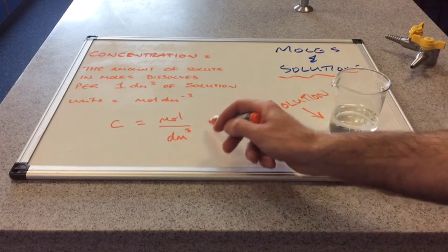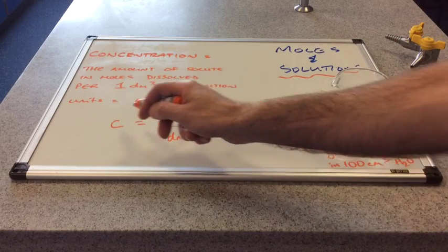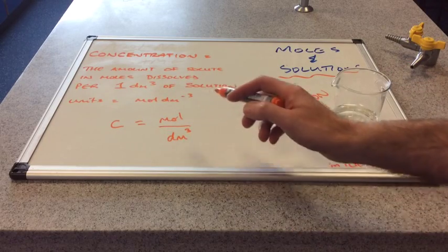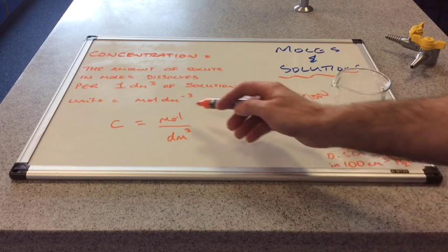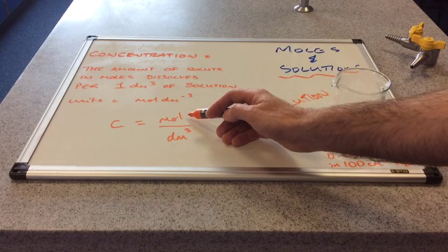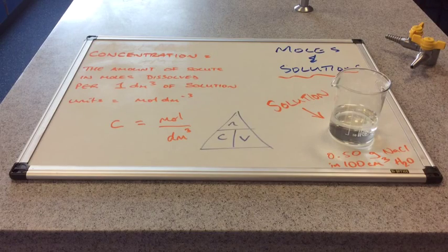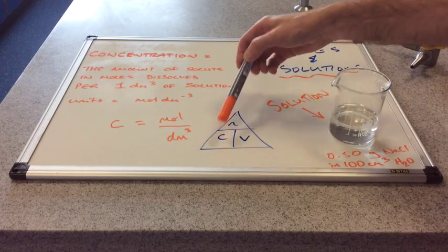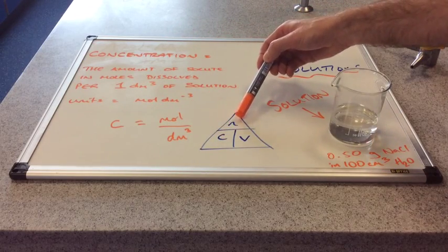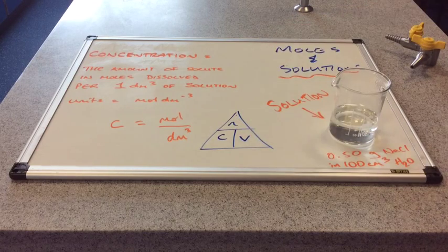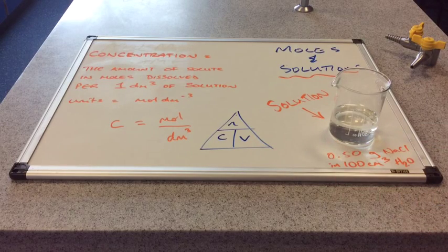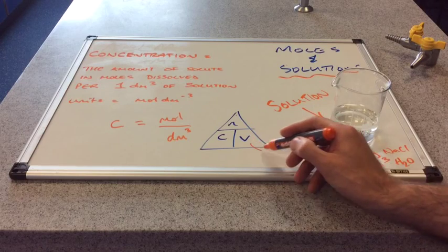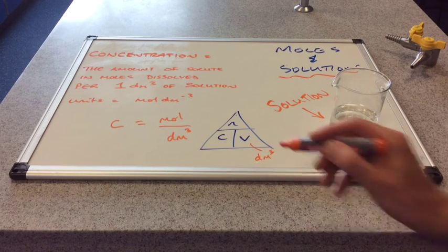We're going to create the formula triangle that links these three terms together. Remember in the previous two triangles — the mass triangle and the gas triangle — we use a lowercase n to represent the amount of moles. So the triangle shows concentration C equals moles n divided by volume V.